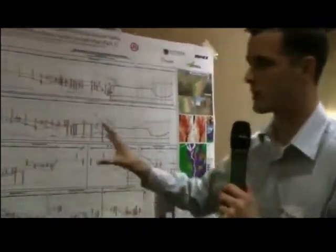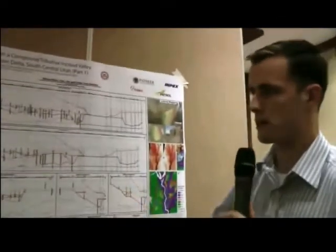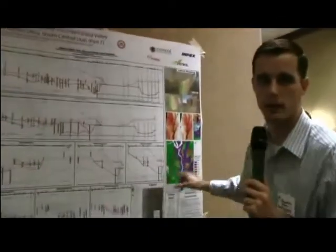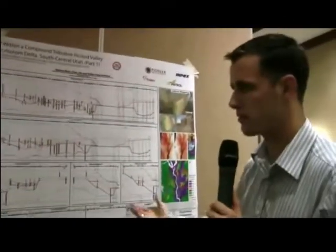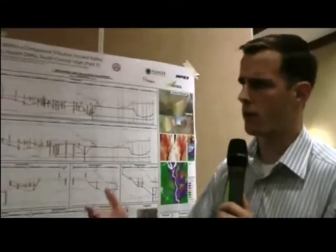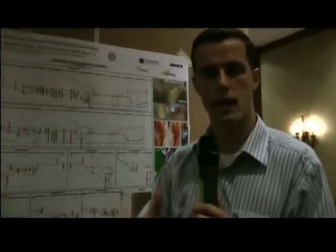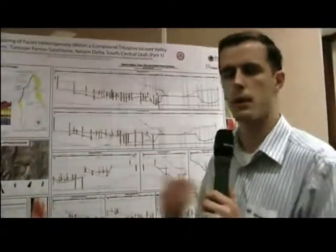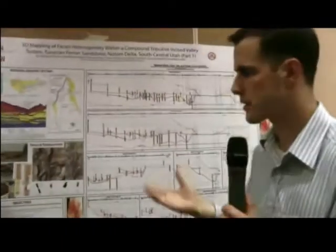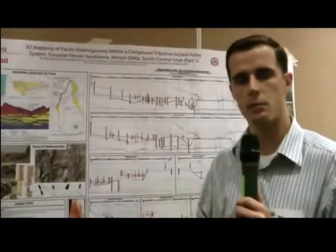Multiple studies have been done in this area, and never has a plan-view map been created that documents each cut-and-fill episode as has been done here. Current models suggest that the confinement relationship of a valley will influence the proportion of sandstone to mudstone. One model suggests that tributaries are always muddier than trunk systems. This study documents that, on the contrary, tributaries can be very sandy.